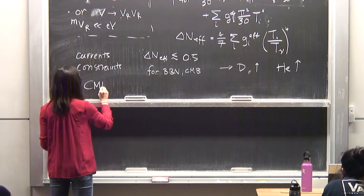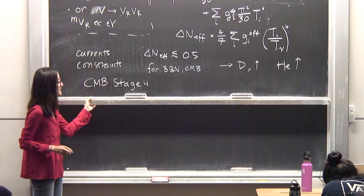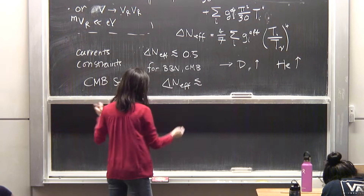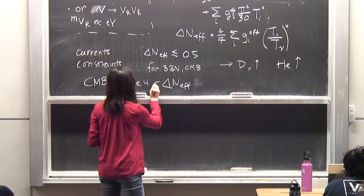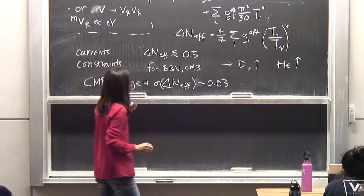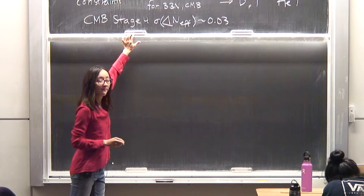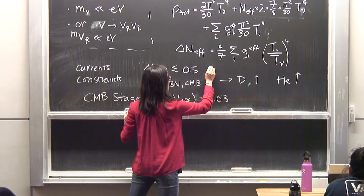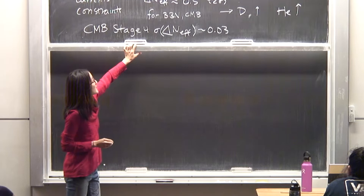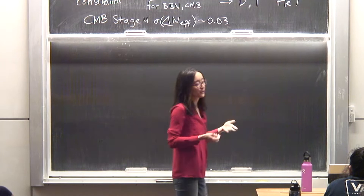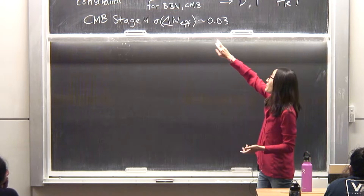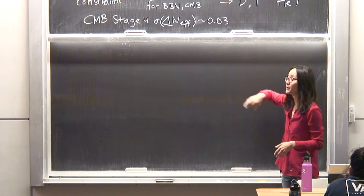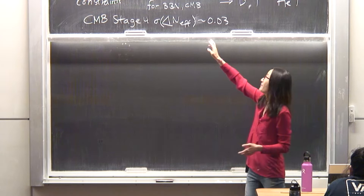There are prospects for doing much better with CMB Stage 4 on a five-to-ten year timescale. Their claimed one-sigma projection (error bar) on delta N_eff is about 0.03 — a full order of magnitude improvement. These bounds are approximate (indicated by squiggles) because for CMB bounds, adding ingredients to the default model — like sterile neutrinos or non-standard neutrino interactions — can relax them somewhat.